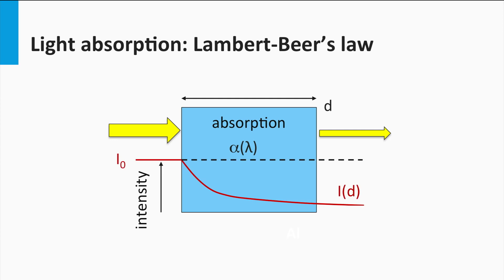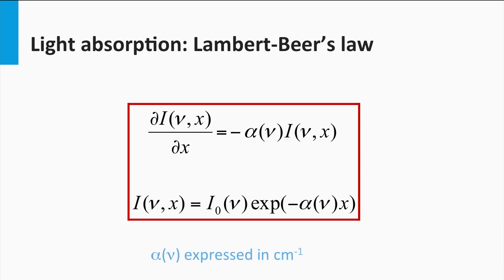The light intensity drops exponentially with distance in the absorber layer. This behavior can be described by the Lambert-Beer's law. This law states that there is a logarithmic dependence between the intensity of the transmitted light through the layer and the product of the absorption coefficient and the path length. Or presented in another way, over an infinitely small distance dx, the decrease in the light intensity due to absorption, dI/dx, is equal to the product of the absorption coefficient and the light intensity at position x. This is the differential form of the Lambert-Beer's law.